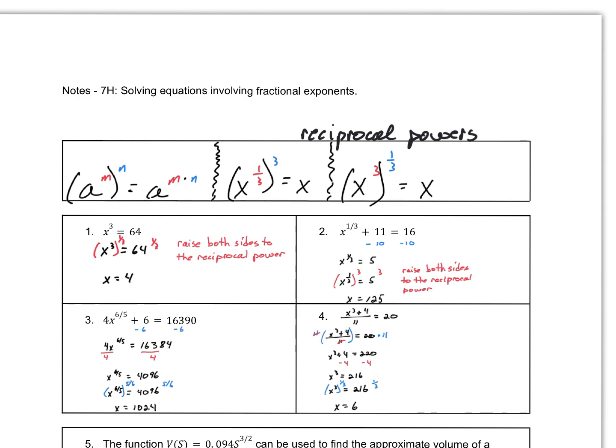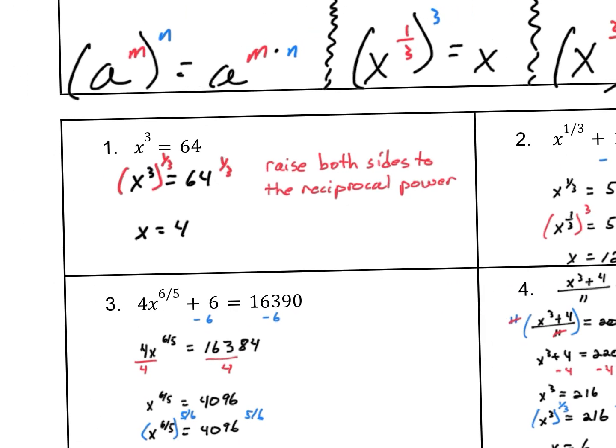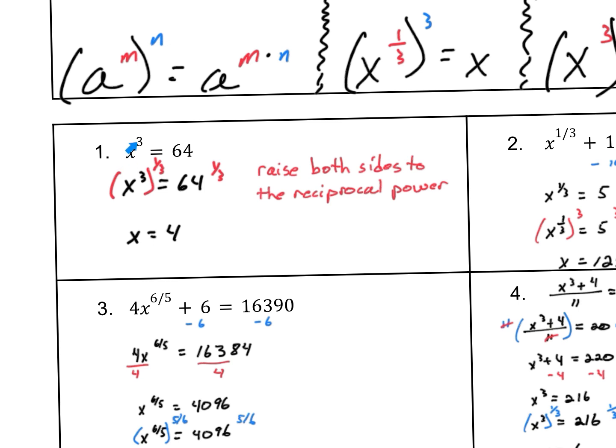Looking at the first example — I'm going to zoom in so we can take a closer look. When we have x to the third, or x cubed, equals 64, some number cubed is equal to 64. If we raise x to the third to the one-third power, we do that because it equals x. If we raise the left side to one-third, we have to raise the right side to one-third as well. 64 to the one-third is also the cube root of 64 — plug it into your calculator and you get four.